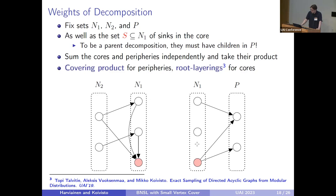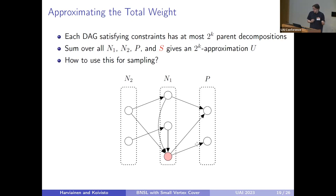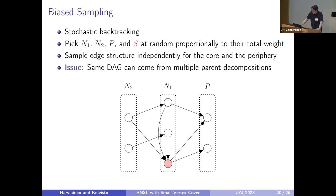These are a bit technical and we can discuss them at the poster session, for example. Because each DAG has at most 2 to the power of k parent decompositions, if we take the total weight of all parent decompositions, we obtain a 2 to the power of k approximation of this total weight of all DAGs. Then the question is how to use this for sampling.